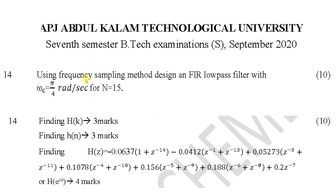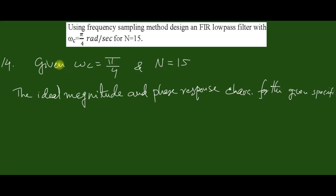Using the frequency sampling method, design an FIR low-pass filter with omega_c equal to pi/4 radians and N equal to 15. The scheme of evaluation and final result are given. For this problem, the cutoff frequency omega_c equals pi/4 and the number of samples N equals 15. As the first step, draw the ideal magnitude and phase response characteristics for the given specifications.